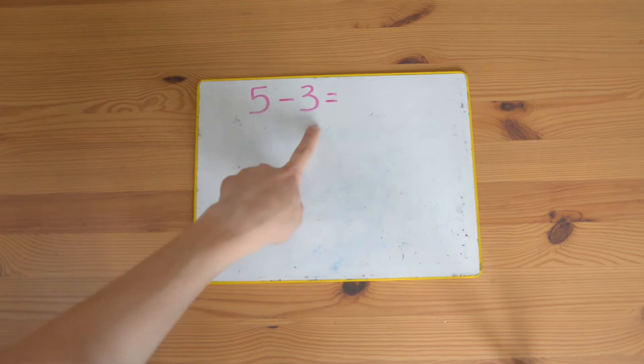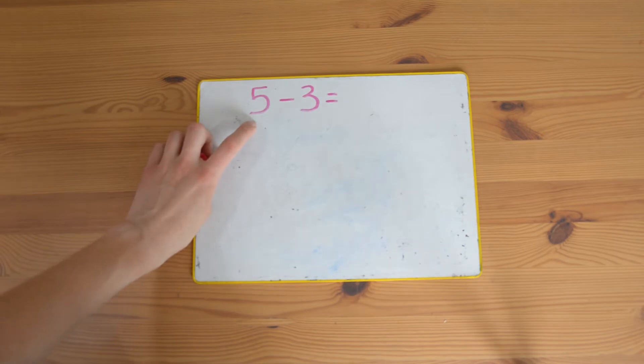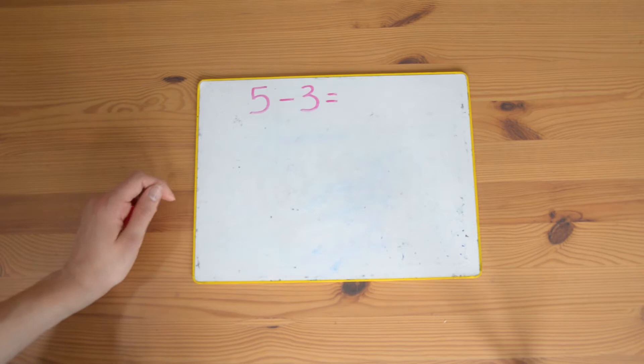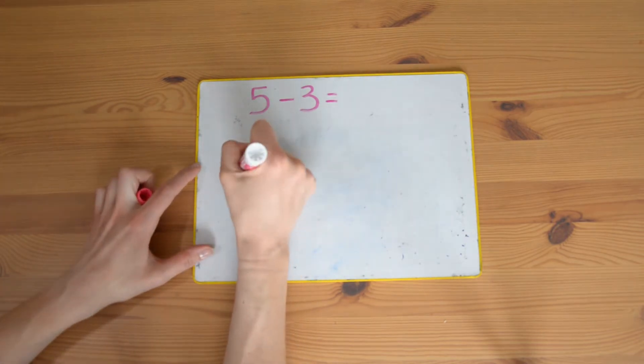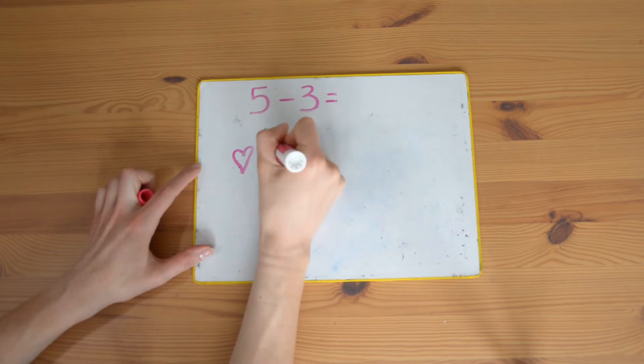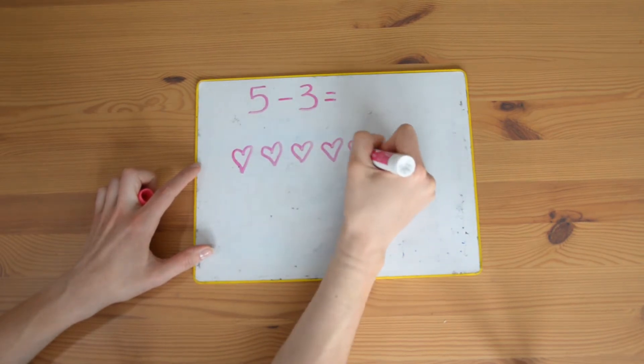Five take away three equals. The first number always tells us how many we had to start with, so we had five. You can draw five of whatever you like. I'm going to draw five love hearts: one, two, three, four, five.